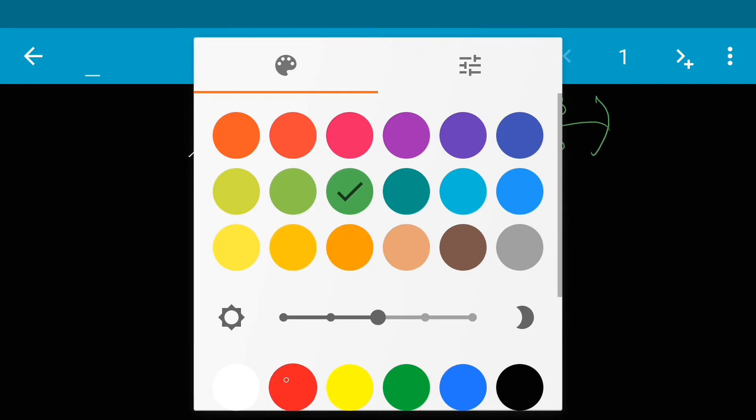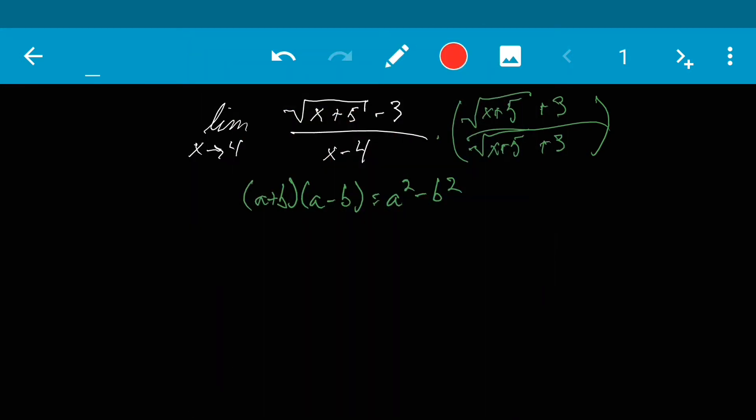So we need to get our a squared and our b squared. So our a term is going to be the square root of x plus 5 and our b term is just going to be 3. So a squared minus b squared is going to equal the square root of x plus 5 quantity squared minus 3 squared. That's our a term and that's our b term.